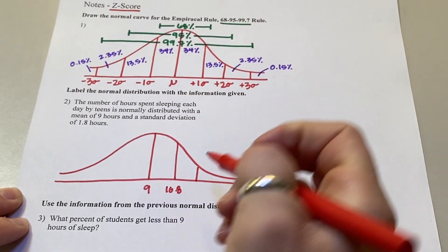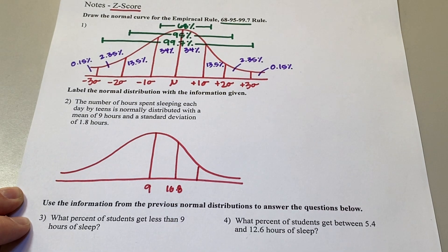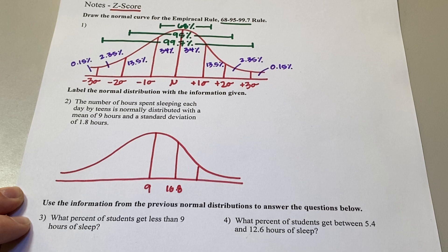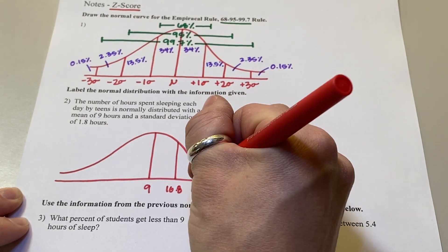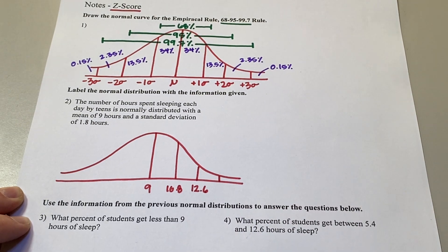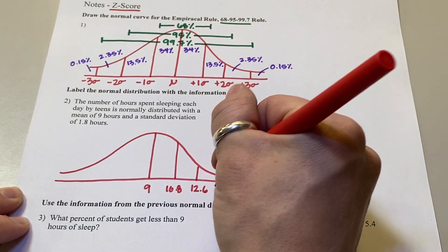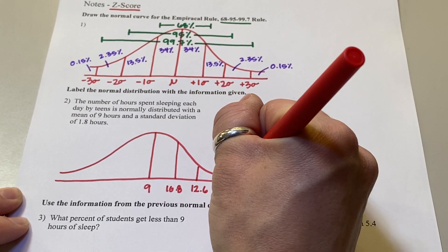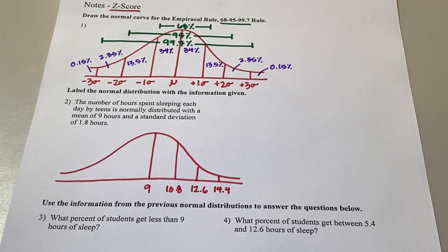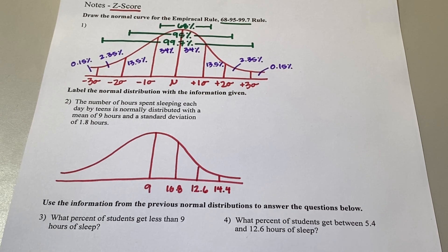Now add 1.8 to 10.8: that's 12.6. Then 12.6 plus another 1.8 gives us our last one — 14.4 hours. Who's getting 14 hours of sleep a day? That'd be nice!